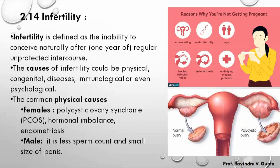When sperm is discharged in the vaginal region, a small penis size may prevent the gamete from reaching the vagina, cervix, uterus, and fallopian tube. So physical causes related to infertility include low sperm count, small penis size, hormonal imbalance, and polycystic ovary syndrome.